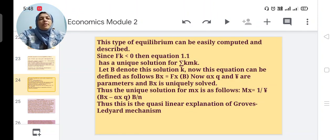This type of equilibrium can be easily computed and described. Since f'k < 0, equation 1.1 has a unique solution for Σk mk. Let be it denoted this solution. Now this equation can be defined as follows: bx = f'x(b̄). Now αx, q and γ are parameters and bx is uniquely solved. Thus the unique solution for mx is as follows: mx = 1/γ × [bx - αx·q] × b̄/n.